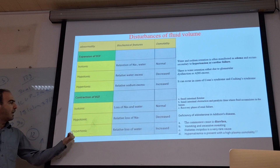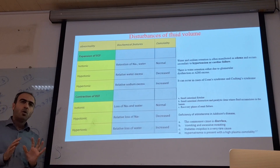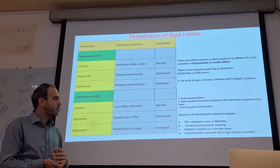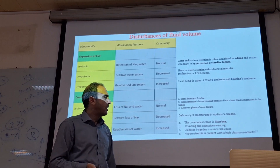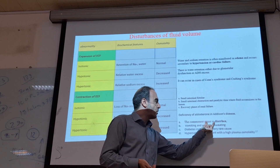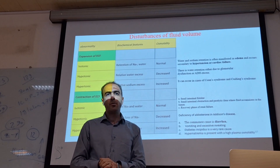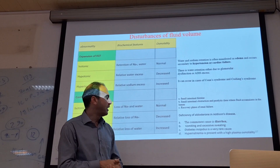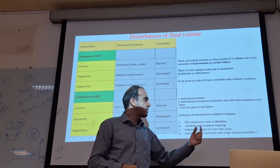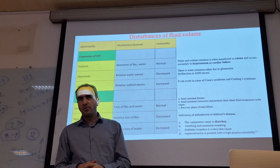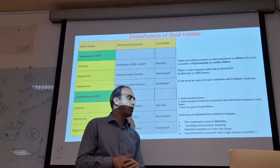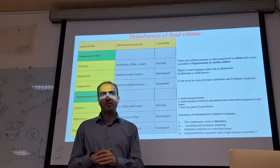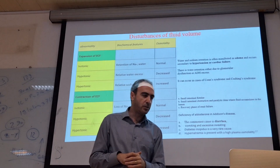In hypertonic contraction, we lose water more than sodium, so osmolality is increased. The commonest cause is diarrhea. Diarrhea can lead to losing water more than sodium. Vomiting, excess sweating, and diabetes insipidus or ADH deficiency can also lead to this situation.